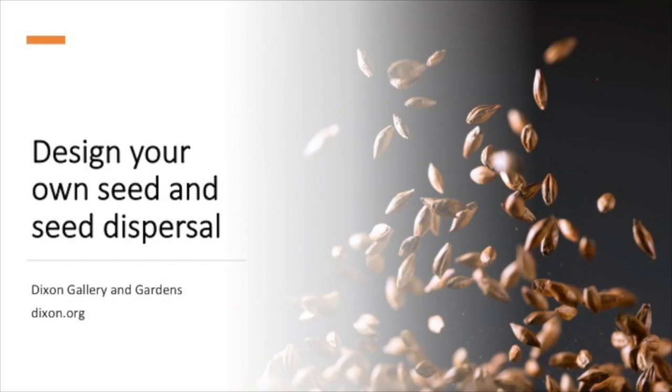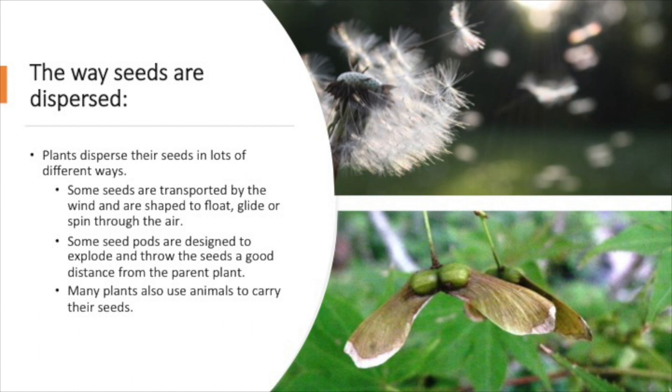Okay. Hi. And so today we are going to show you different ways seeds can be dispersed. So what do you think? Which ways can seeds be dispersed? You have your ideas? So seeds can be dispersed in different ways. And so some can be transported by wind, just like the dandelions. And they are shaped to float or glide through the air. And then some other seeds, like seed pods, are designed to explode and throw seeds a good distance from the parent plant. So sometimes it's like putting seeds into a balloon and popping it, and then they just go everywhere. And then you have many seeds that are also carried by animals, like on their fur or they're eaten and they get displaced in other areas.